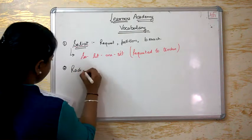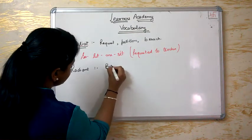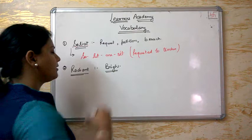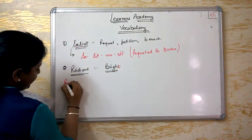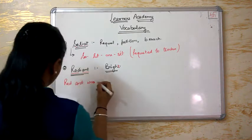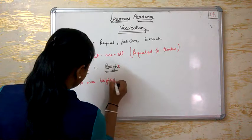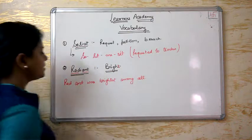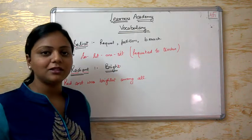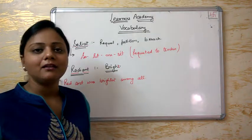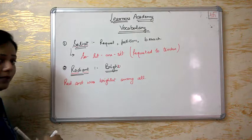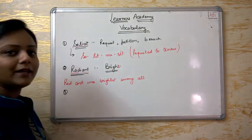Next word is Radiant. Radiant means bright. This is one of the words which has been given in previous papers. How do we remember? Radiant — bright. If we split it: Red and ant. 'Red ant was the brightest among all.' So what did I do? Radiant — Red ant — it was the brightest among all. I tried to use both the words in a sentence which you will remember. You can also make your own new sentences and new formulations.